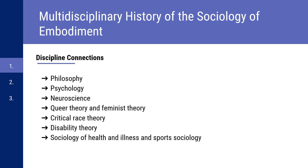Like many fields, embodiment is multidisciplinary and sociology has contributed to thinking in other fields and vice versa. Other disciplines that connect to it include philosophy, psychology, neuroscience, queer and feminist theory, critical race theory, disability theory, and within sociology, the sociology of health and illness and sports sociology. All of these think about the body in different ways, have different things to contribute, and make up a sort of team when thinking about the body and embodiment.